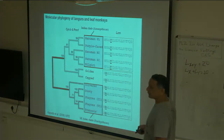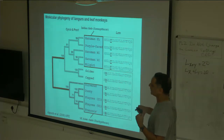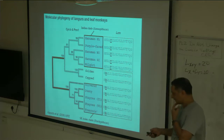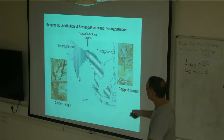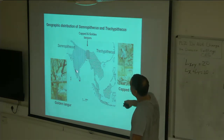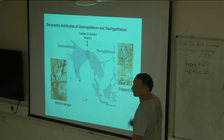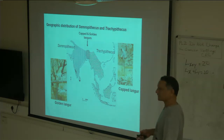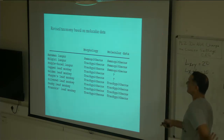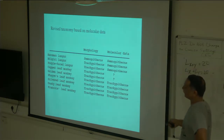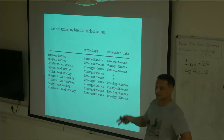The golden and capped langur is found in Northeast India. Some markers put them with Semnopithecus, others put them with Trachypithecus. Kunal's work basically showed that this is of hybrid origin — if you look at the distribution of golden and capped langur, it is sandwiched between Semnopithecus and Trachypithecus. Molecular data has helped clarify these issues. All of this is now Semnopithecus, all of that remains Trachypithecus, and these Northeast langurs of hybrid origin probably should be assigned to a different genus.